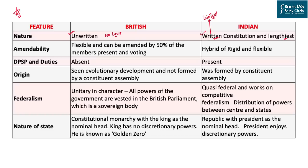The second difference is amendability. The British constitution is flexible and can be amended by 50% of the members present and voting. However, in India under Article 368, the constitutional amendment process is very rigid. It requires special voting and a special session, making the process cumbersome. However, as per the Kesavananda Bharati case, the entire constitution can be amended until it reaches the basic structure.